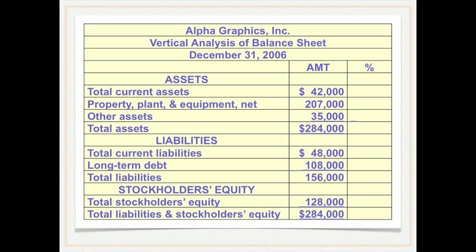Here is a spreadsheet of this same data and we're going to perform a vertical analysis of the balance sheet. Remember that each line item is going to be expressed as a percent of total assets, or equivalently total liabilities and stockholders' equity. Please note that these are the same number, so it's kind of interchangeable.